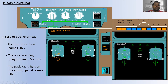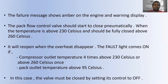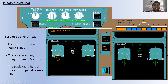The pack fault light on the control panel comes on. On the bleed page, you can see the failure shown in amber color compared to the normal green. The failure message also shows amber on the engine and warning display when pack one is overheat.